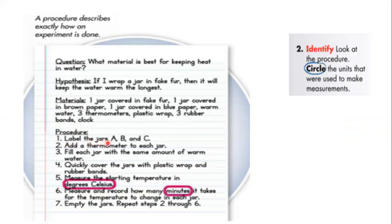We label the jars. Add a thermometer to each jar and fill each jar with the same amount of warm water. Now quickly cover the jars with plastic wrap and rubber bands. Measure the starting temperature in degrees Celsius. Measure and record how many minutes it takes for the temperature to change in each jar. Empty the jars. Repeat steps two through six.